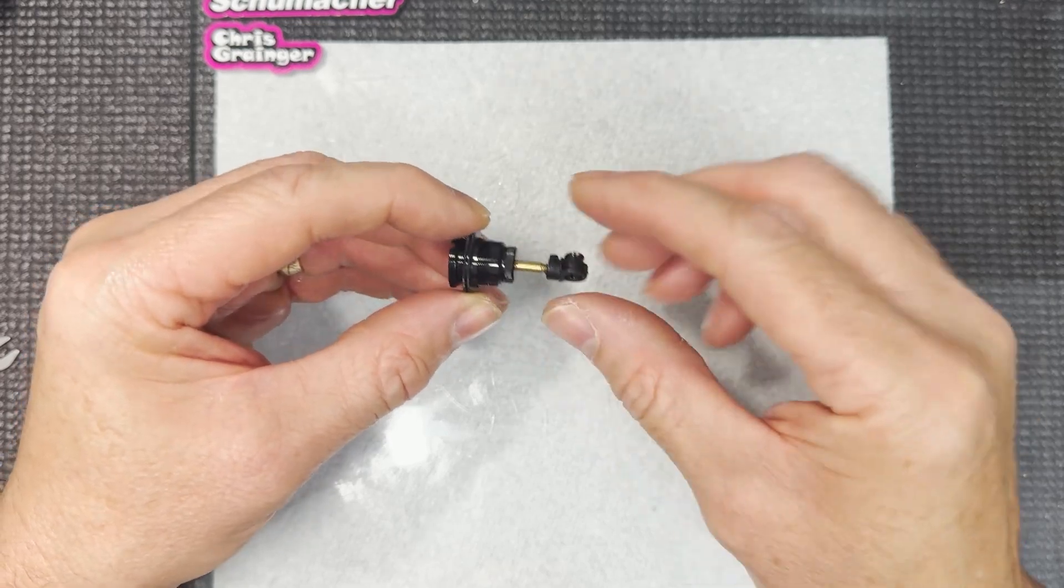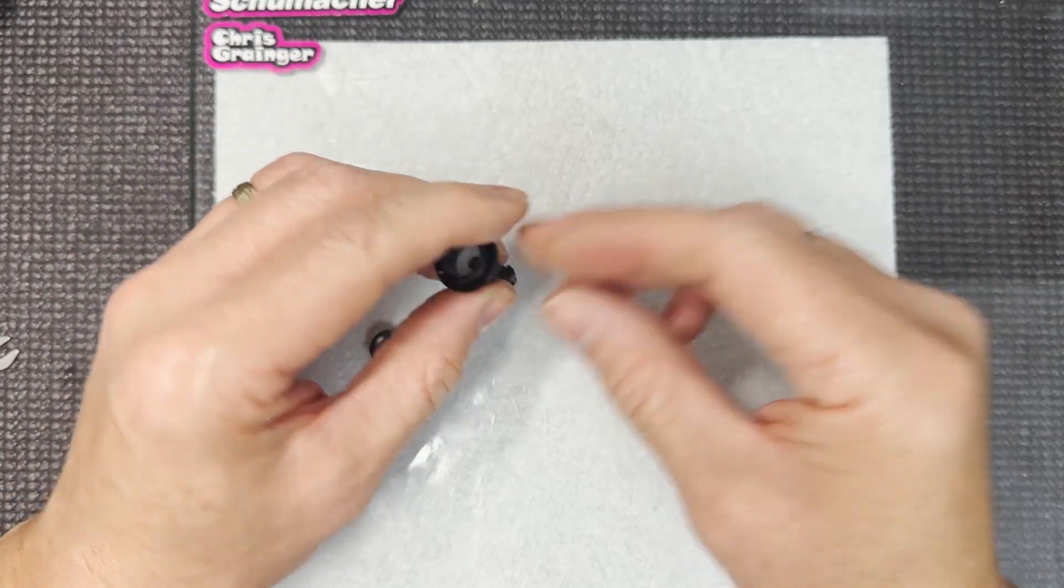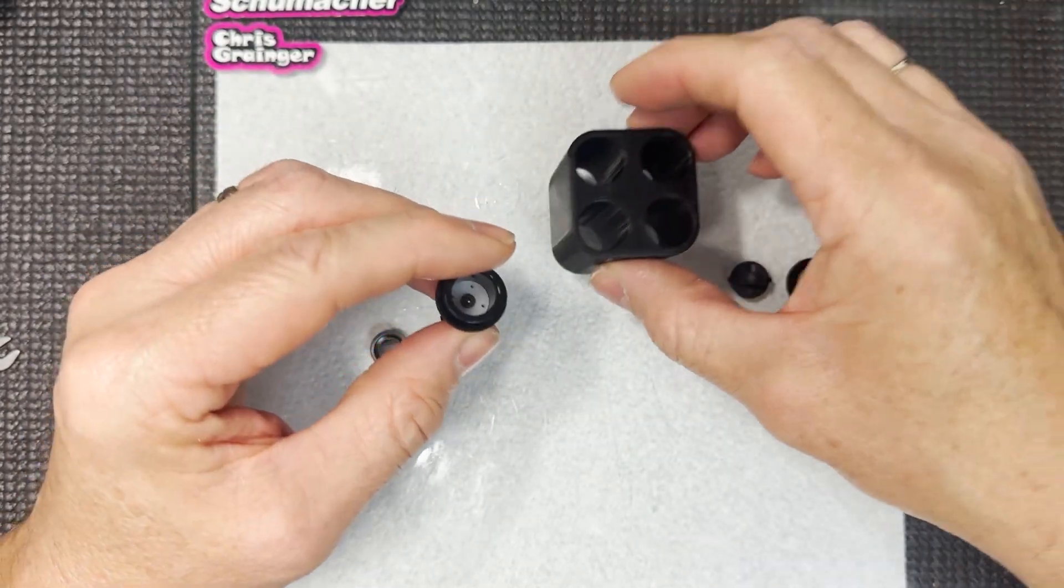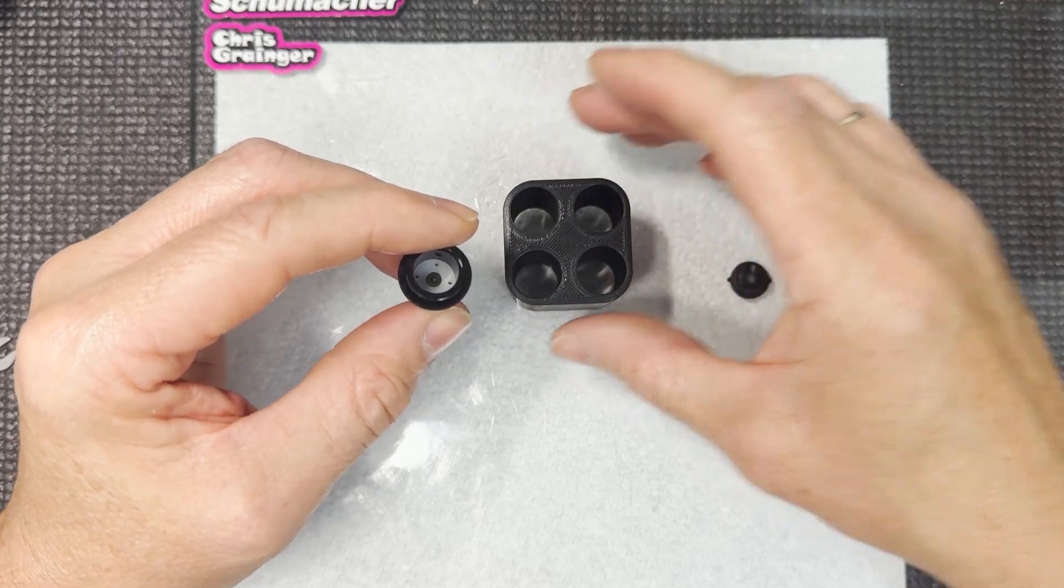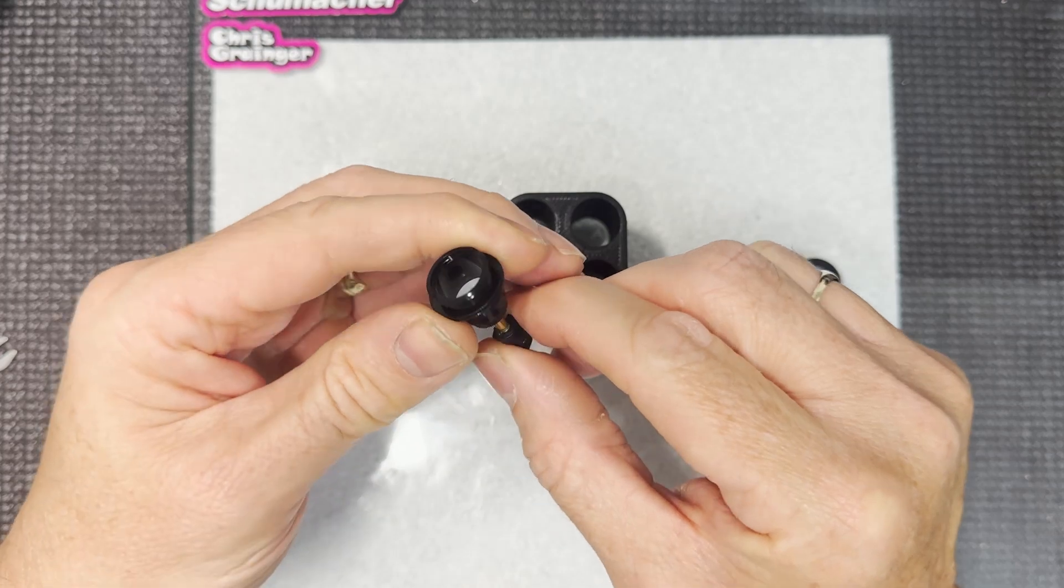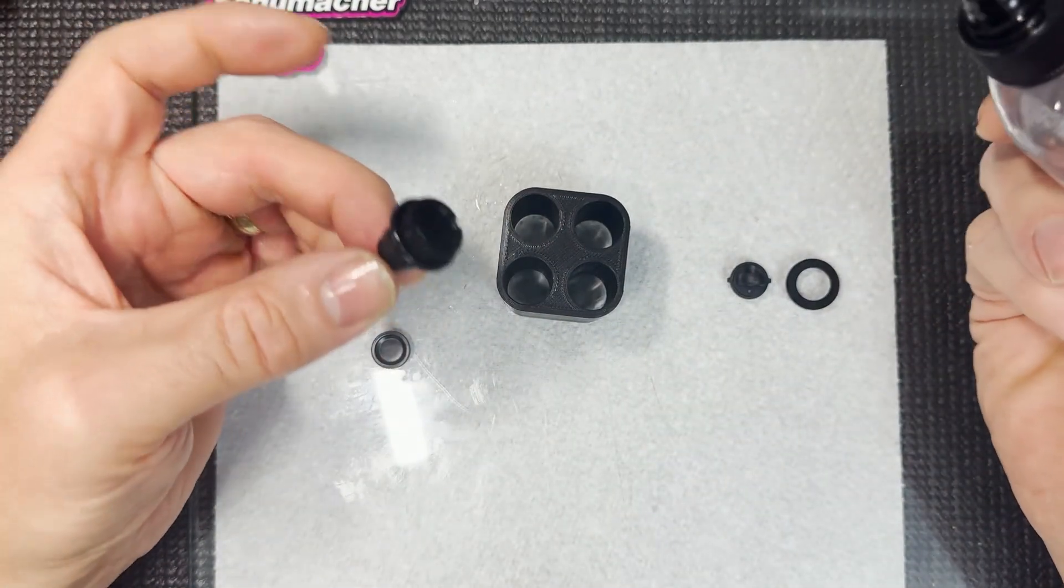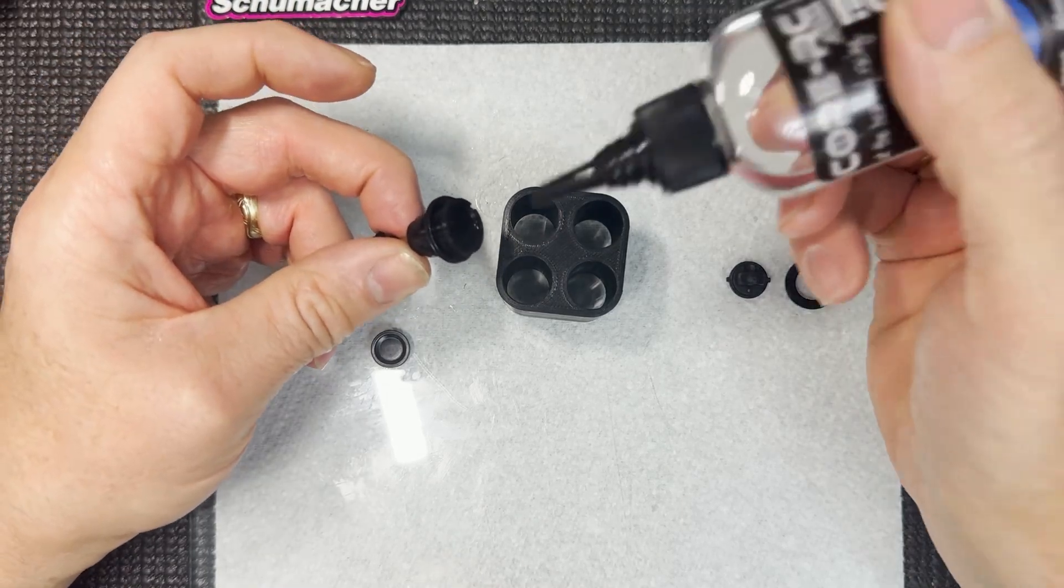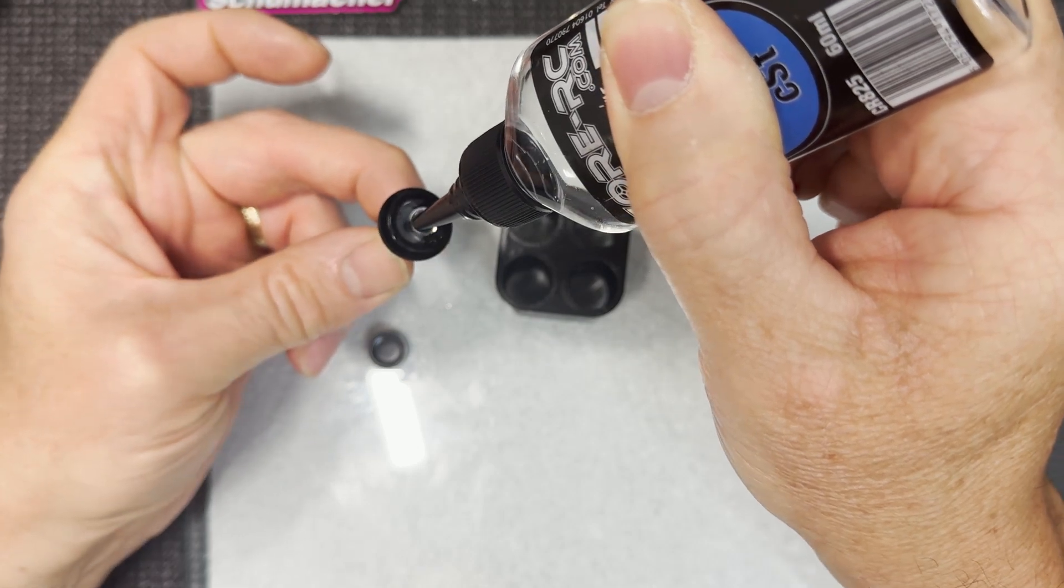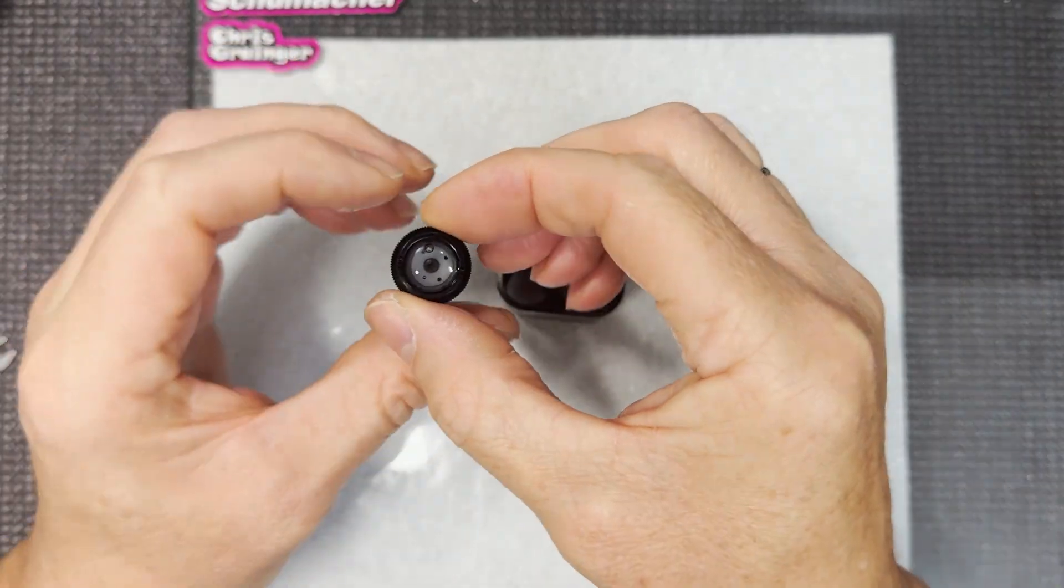That's basically your shock together. We're going to fill this up with oil now and get ready to bleed it off and seal it up and get everything ready to race. We're going to start off with 375. What I would do to start with is I'll tip this, a bit like pouring a drink. Tip the body to the side and then put the oil in this way, straightening it up just as we get to the top. Like pouring a fizzy drink.